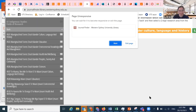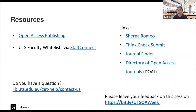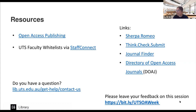The slides are hyperlinked and will be shared with everyone. The final slide lists resources including the open access publishing page from the library website, faculty whitelists available via Staff Connect, and links to each of the tools shown in today's workshop. If you have questions or would like help finding high-impact open access journals, please get in contact. This is the first time we've run a session like this, so we'd appreciate your feedback on what was helpful and what could be improved.